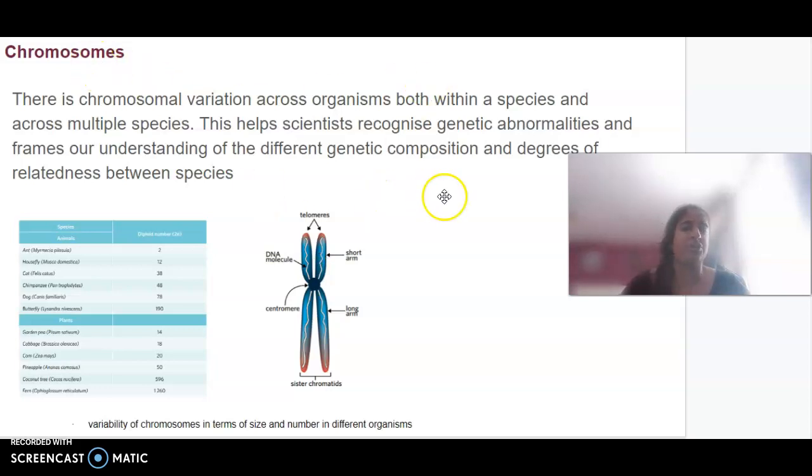There are chromosomal variations across all species. Different animals have different numbers of chromosomes in their cells, which ensures and shows the relatedness between species. If the chromosomes are different, say we have less or more, that's when we may start to look at chromosomal abnormalities and what that might mean.